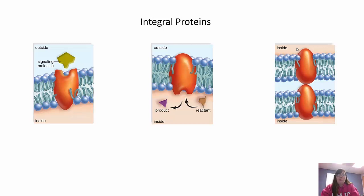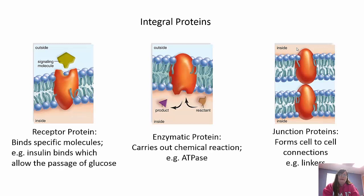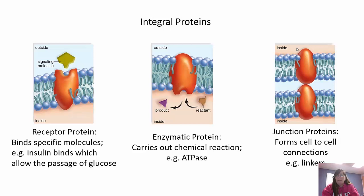We also have receptor proteins. Receptor proteins work when some signaling molecule binds to the protein, causing the cell to do whatever the signal tells it to do. For example, insulin will bind to that receptor and allow glucose into the cell, or another hormone will bind and tell that cell to perform whatever that hormone does. We have enzymatic proteins that help catalyze reactions - ATPase is an example. Remember, enzymes usually end in -ase, so ATPase is for ATP.